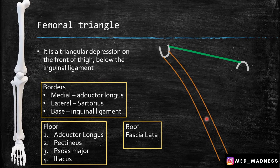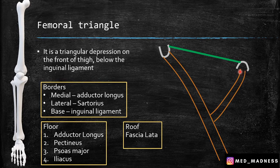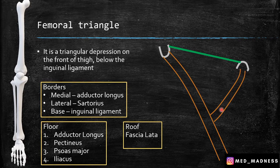And what is the medial border? This muscle is called adductor longus. It originates from the anterior surface of the body of the pubis, and this forms the triangle. This is the femoral triangle.